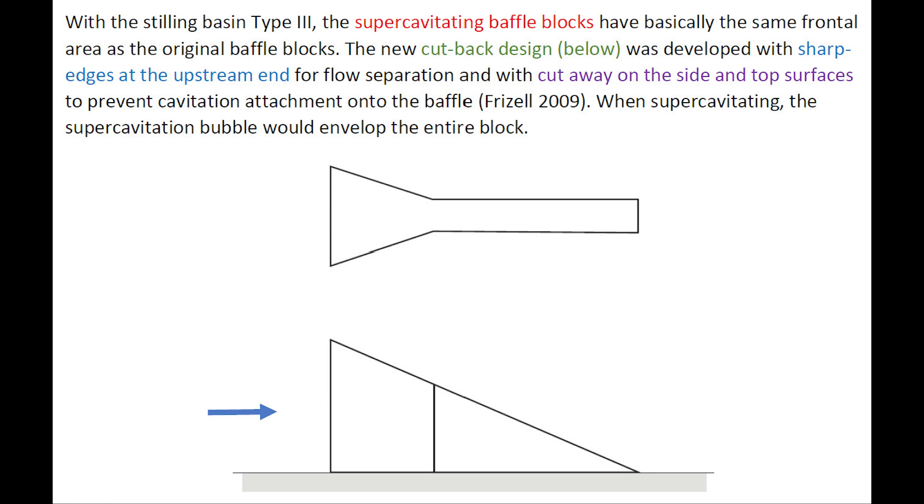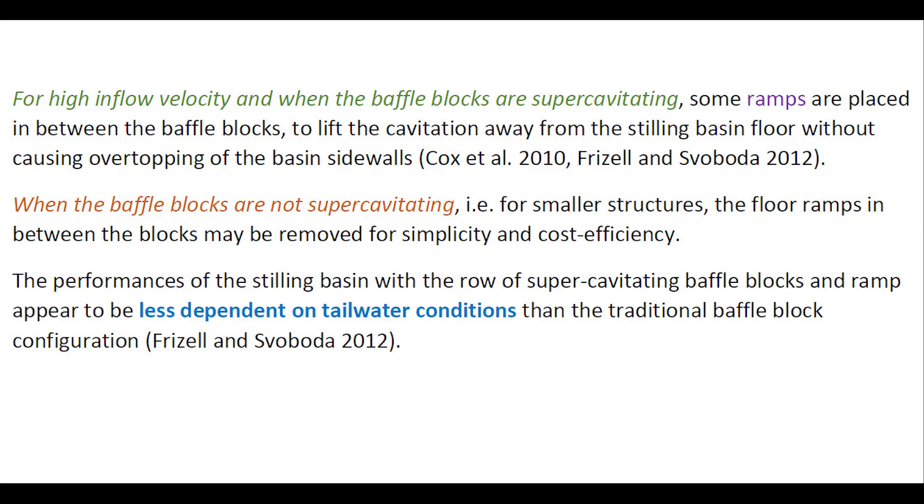When supercavitating, the supercavitating bubble would envelop the entire baffle blocks. With high inflow velocity and when the baffle blocks are supercavitating, some ramps are placed in between the baffle blocks to lift the cavitation away from the Stilling Basin floor without causing overtopping of the basin side walls. When the baffle blocks are not supercavitating, that is for smaller structures, the floor ramps in between the blocks may be removed for simplicity and cost efficiency.